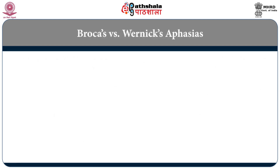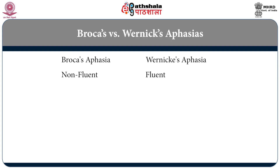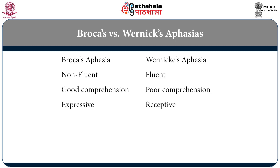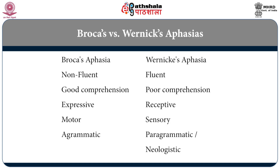Comparing Broca's aphasia with Wernicke's aphasia: Broca's is non-fluent; Wernicke's is fluent. Broca's is characterized by good comprehension; Wernicke's by impaired comprehension. Broca's is also called expressive aphasia because the problem is with expression; Wernicke's is called receptive aphasia because the problem is with understanding. Broca's is referred to as motor aphasia; Wernicke's as sensory aphasia. Broca's aphasia results in agrammatism, while Wernicke's results in paragrammatism with neologisms — new words not found in the language.